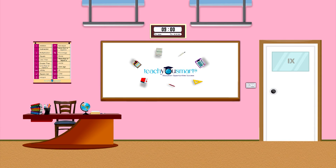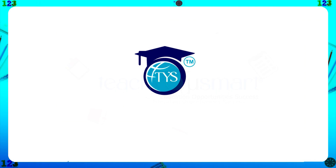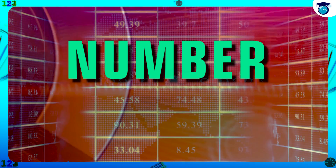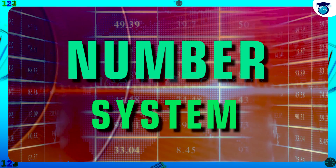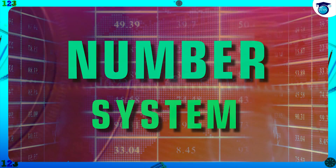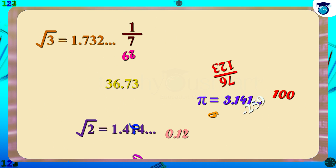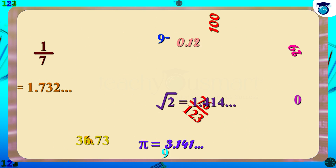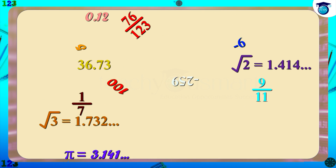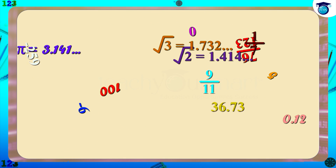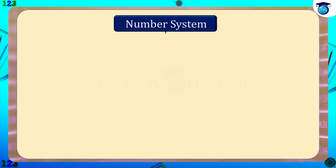Hello students, welcome to Teach You Smart. Today let's open up a new topic: Number System. Numbers in total can be basically divided into different groups and subdivisions according to their pattern, character, properties, and easiness to conceive. All numbers are divided as real numbers.